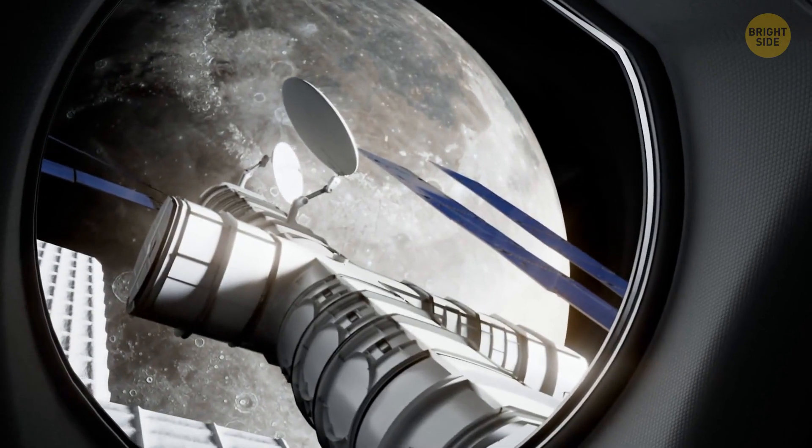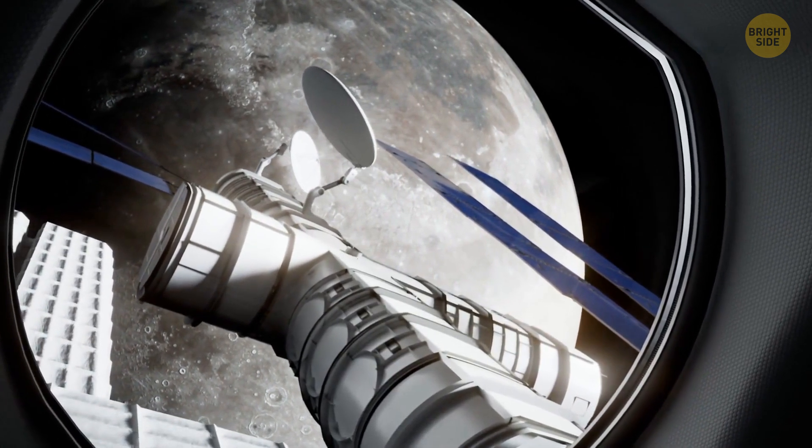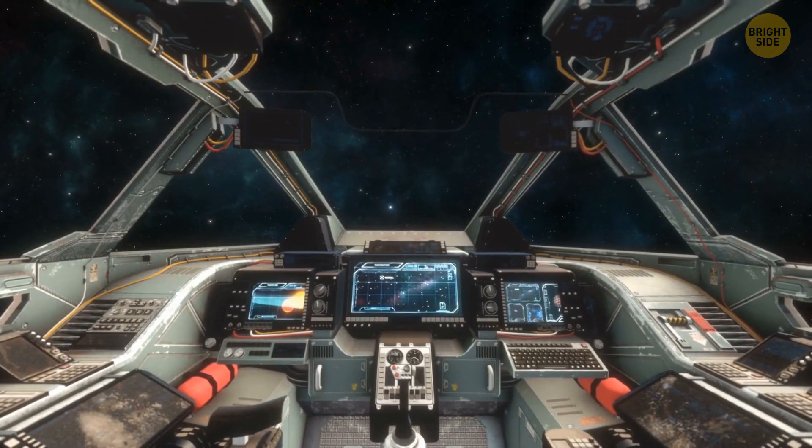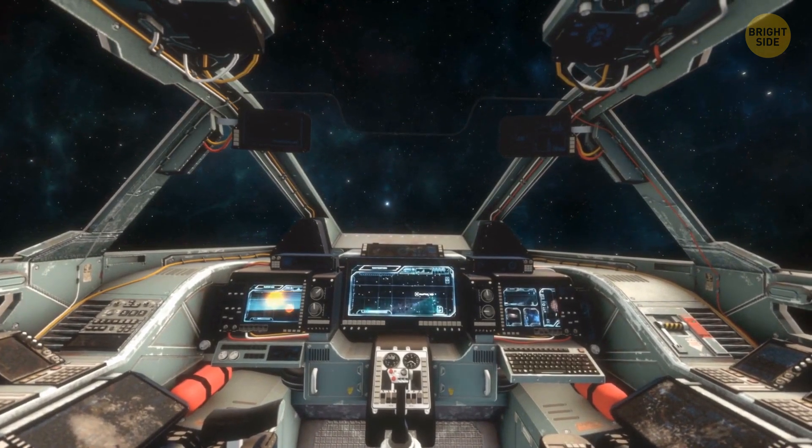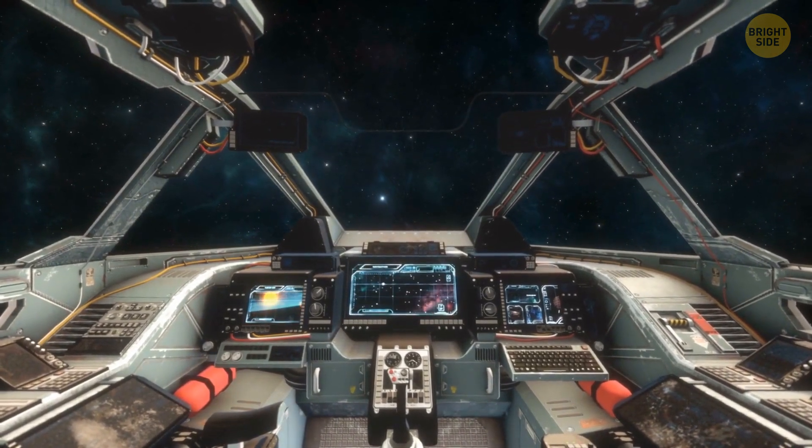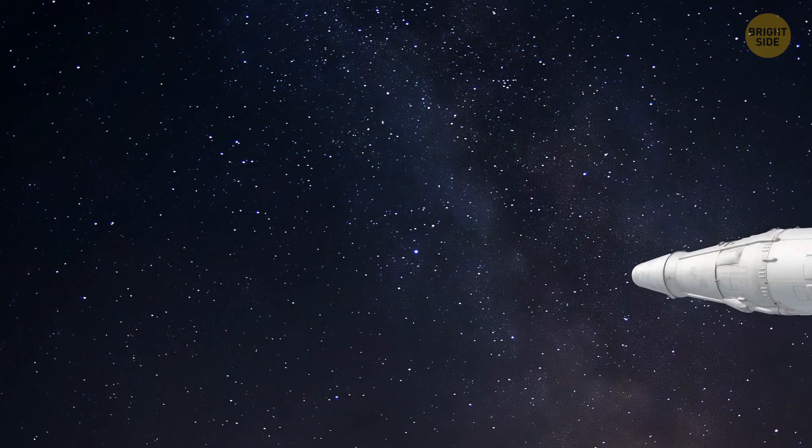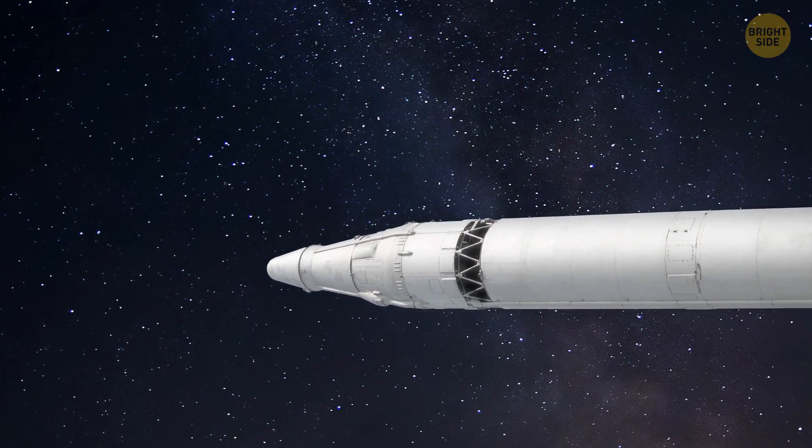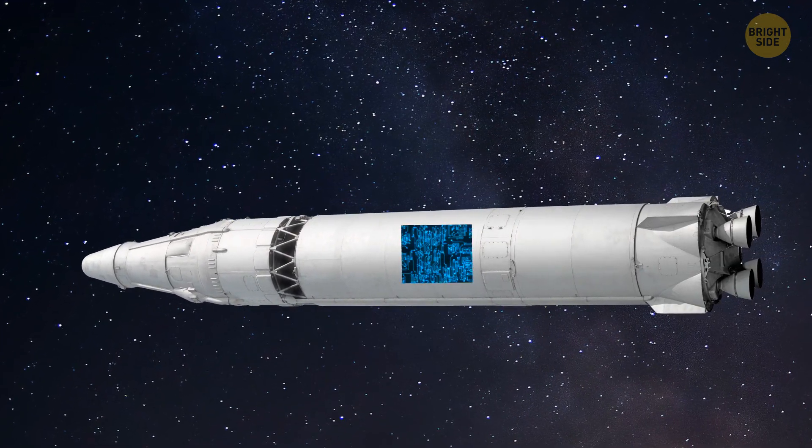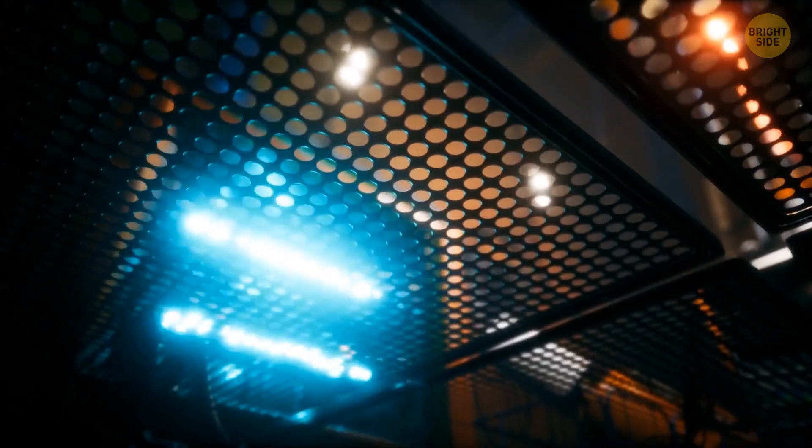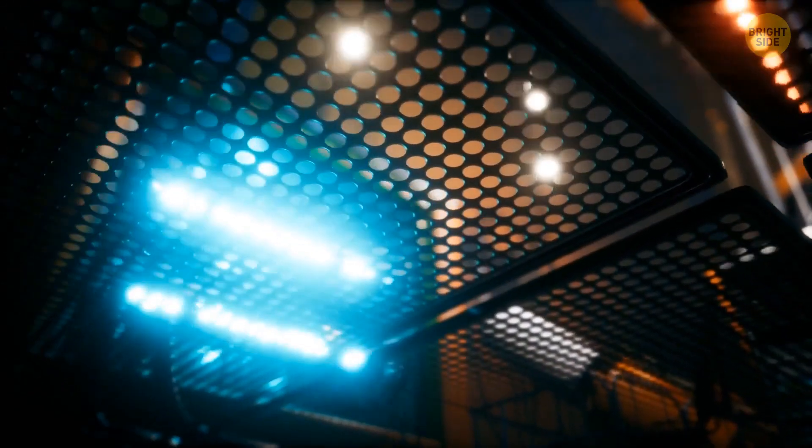One day, Orion will be the vehicle that will take astronauts to the moon again. It features a launch abort system to keep astronauts safe in case something bad happens during the launch. It also has a service module, which is the powerhouse that fuels and propels Orion and keeps astronauts alive with water, oxygen, power, and temperature control.